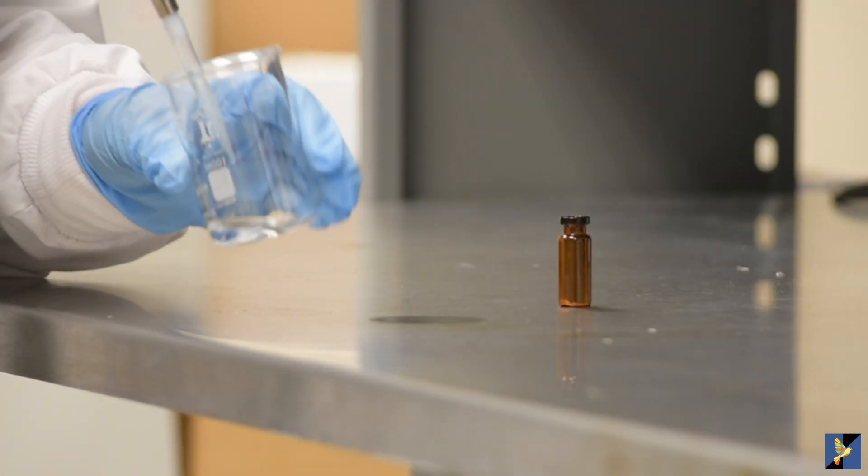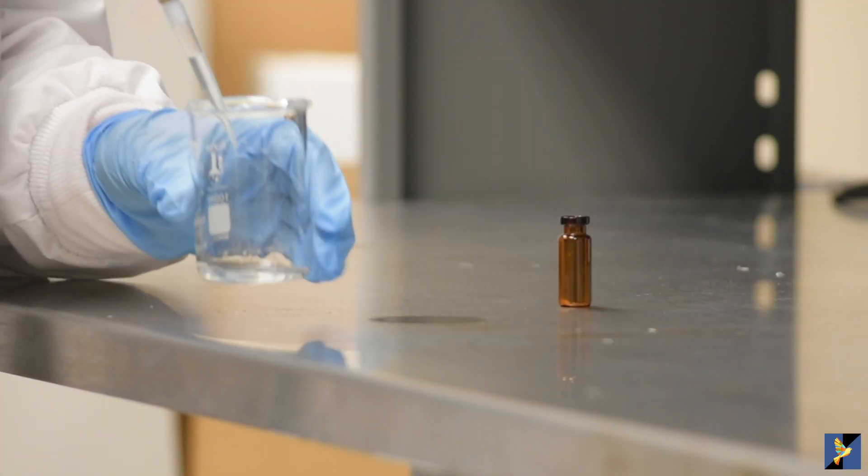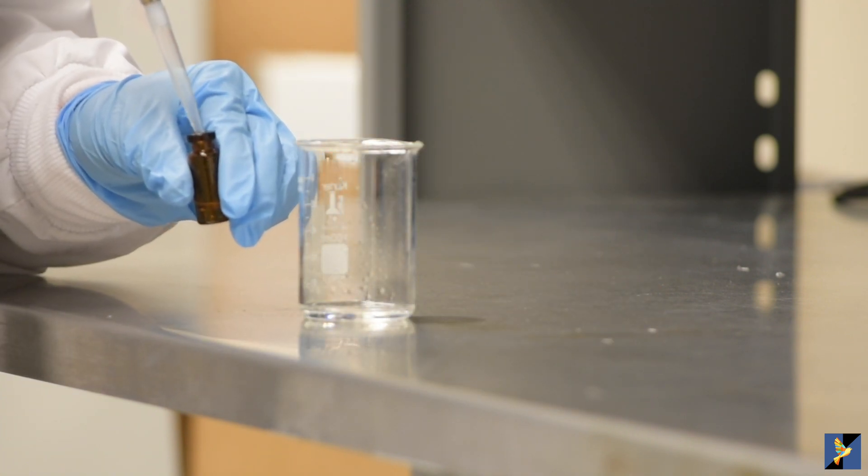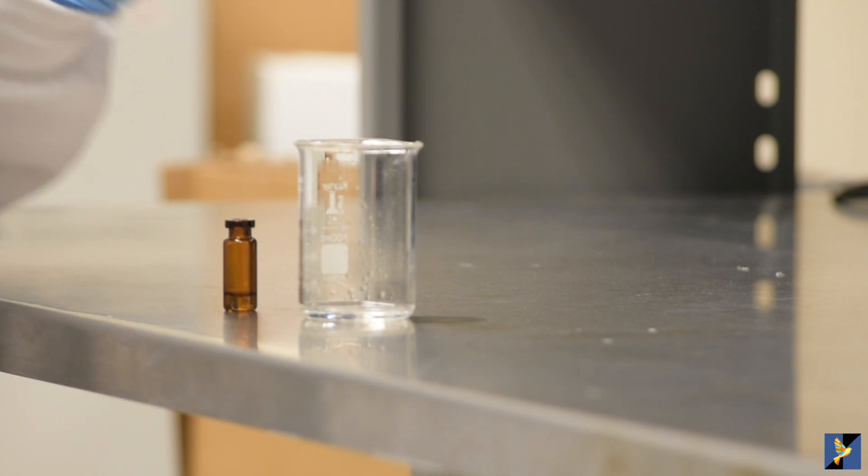Begin by reconstituting one vial of the Proteometer L reagent by adding dimethyl sulfoxide. Gently mix the contents and set in the dark for at least 30 minutes.